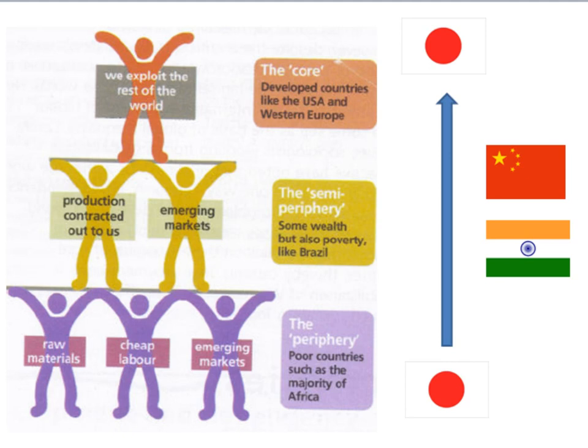However, movement from the periphery to the core is normally very difficult, and the rise of one group of semi-periphery nations tends to be at the cost of another group. So the unequal structure of the world economy, based on unequal exchange, tends to remain stable and constant even if certain nations move around within the system.